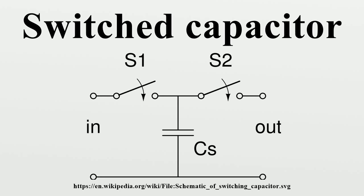This same circuit can be used in discrete time systems as a track-and-hold circuit. During the appropriate clock phase, the capacitor samples the analog voltage through switch one, and in the second phase presents this held sampled value to an electronic circuit for processing. Switched capacitor circuits are also used to provide accurate voltage gain and integration by switching a sampled capacitor onto an op-amp with a capacitor in feedback.